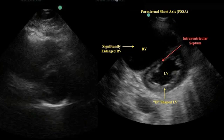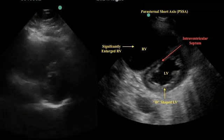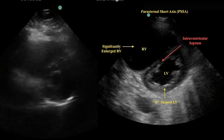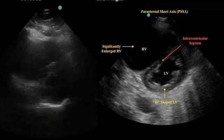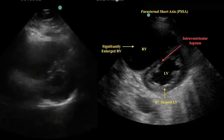You can also see this RV enlargement in the parasternal short axis view. When the RV is under pressure, it stretches and then pushes the LV to give you this D-shaped ventricle in the parasternal short.